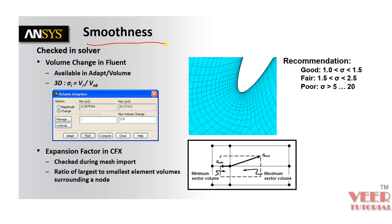In case of smoothness, we can see smoothness means the proper element size. So here we can see, it is a very smooth mesh. So for a good smoothness, it is calculated using the formula that is sigma i equal to Vi by Vnb. So if the value is between 1 and 1.5, it is good. And if it is greater than 5, it is a poor quality.